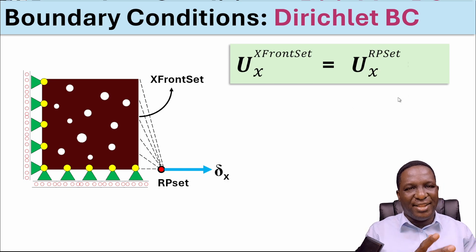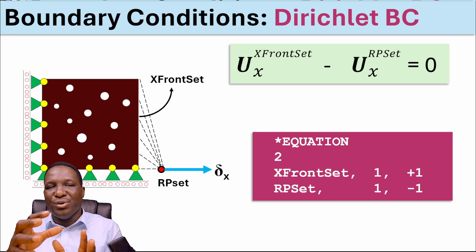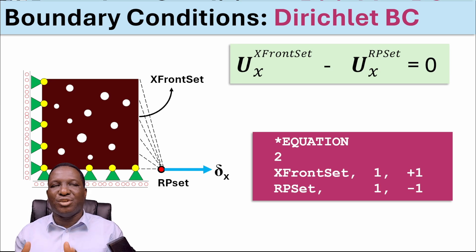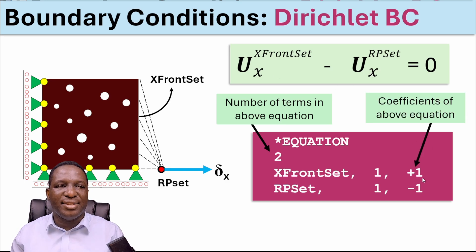Because we need to specify the equation in canonical form, we write it as: this minus that equals zero. Within Abacus, which is the software we're using for this analysis, there is a star command which you can use to impose this condition on the behavior of the system. Number two here is the number of terms in this equation, and the last plus one and minus one column is basically the coefficients of the equation.